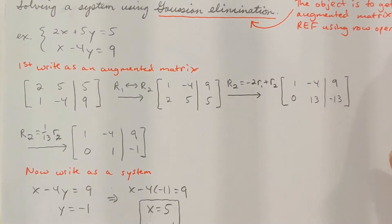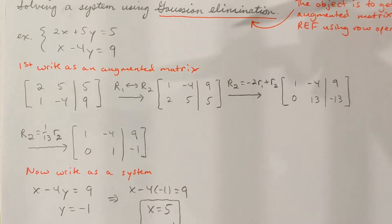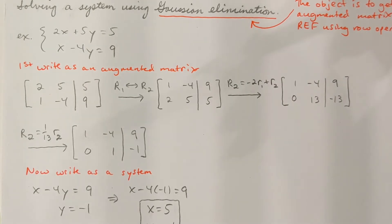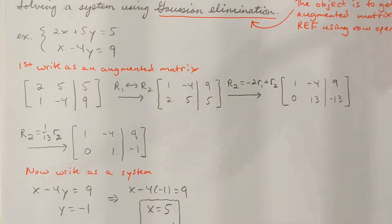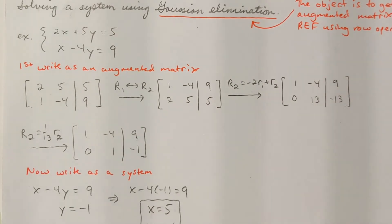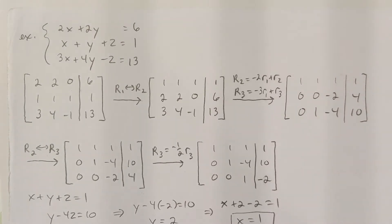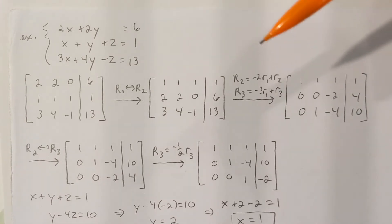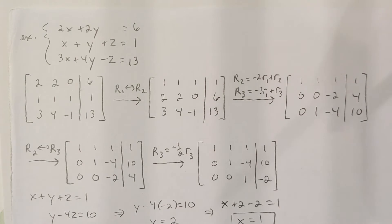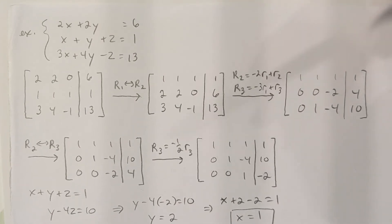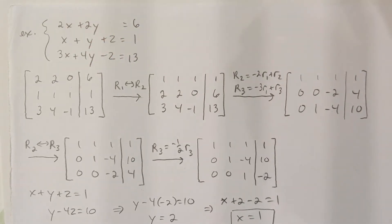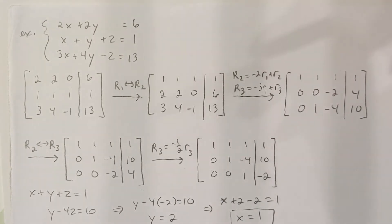We did a lot of things with 2x2 systems in section 6.1. If you're not told the method and you've got a 2x2, most people would probably use either substitution or elimination — those would be the preferred options. Matrices is fine, but most people probably wouldn't go to that for a 2x2. If you have a 3x3 or bigger system, matrices in my opinion is going to be your best option. I'm not going to give you more than a 3x3 on an assignment — if you've got the idea with a 3x3, you've got the idea. Let's look at some 3x3 systems.